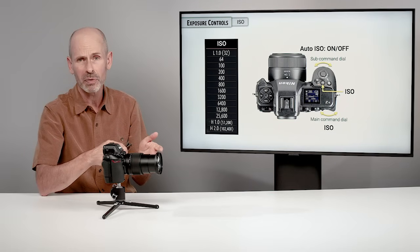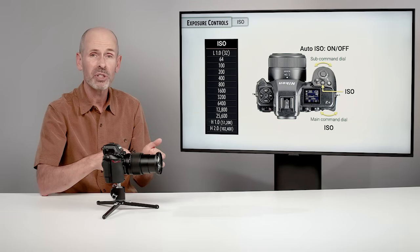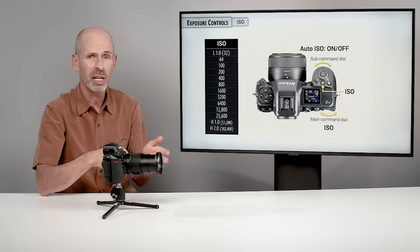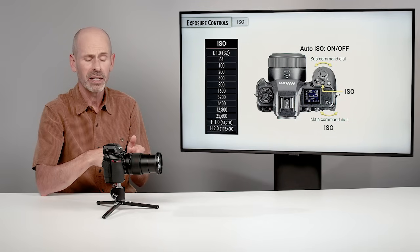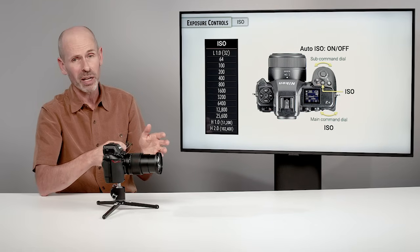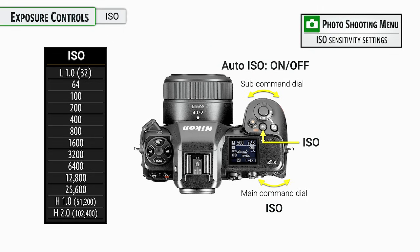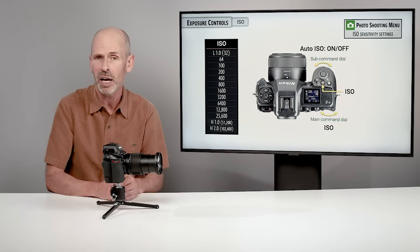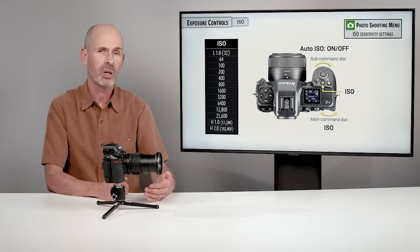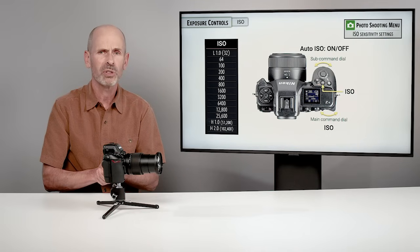In practice, using shutter priority with auto ISO isn't that different from setting manual exposure and enabling auto ISO. Auto ISO is useful when light changes rapidly and you're shooting quickly from one area to the next. Not everyone likes it — test it and see how it works for you. For detailed auto ISO settings — like the minimum shutter speed threshold and maximum ISO — go to the photo shooting menu under ISO sensitivity settings, covered further in section 12.